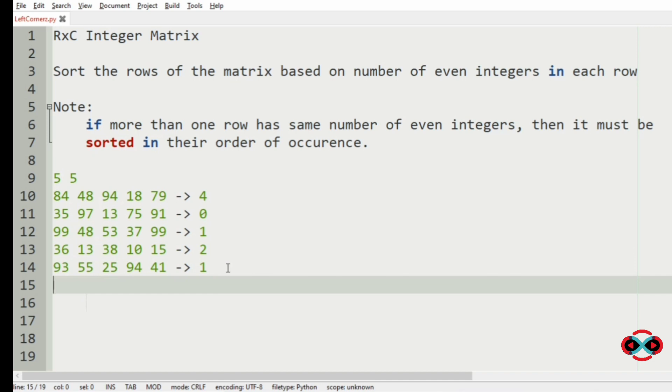So now we have to sort the rows based upon the number of even integers in each row. So now 0 is the smallest number. So we will start from this row. This will be our first row. So that is 35, 97, 13, 75 and 91.